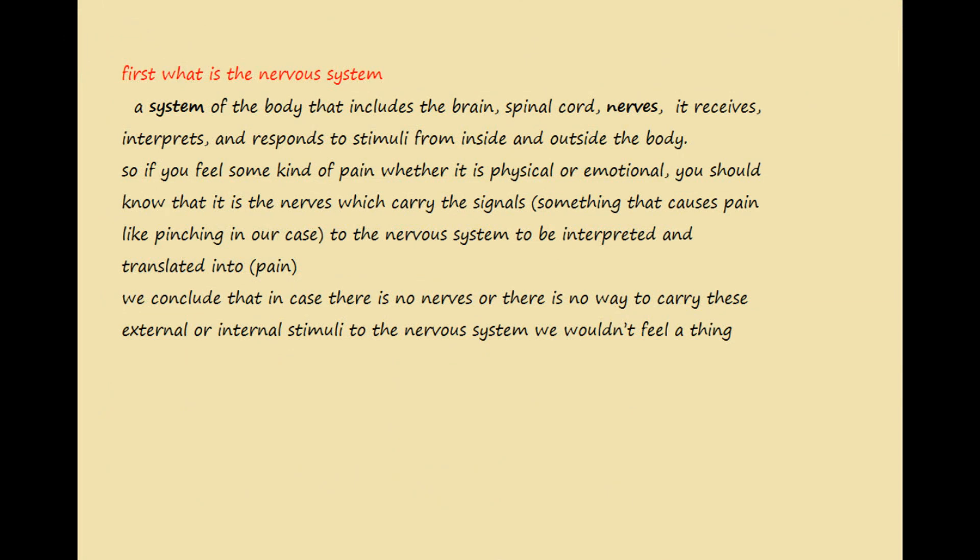The nervous system is a system of the body that includes the brain, the spinal cord, and the nerves. It receives, interprets, and responds to stimuli from inside and outside the body. If you feel some kind of pain, whether physical or emotional, it is the nerves which carry the signals to the nervous system to be interpreted and translated into pain.